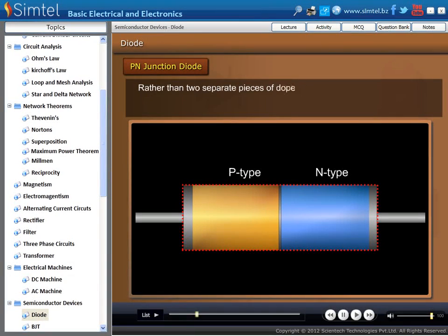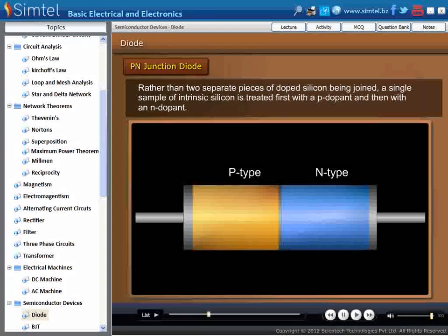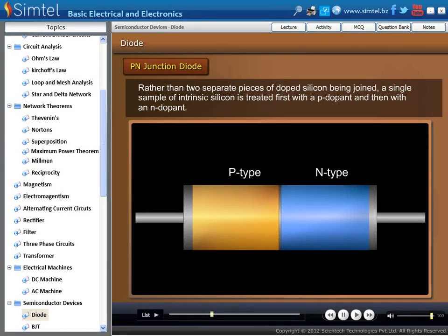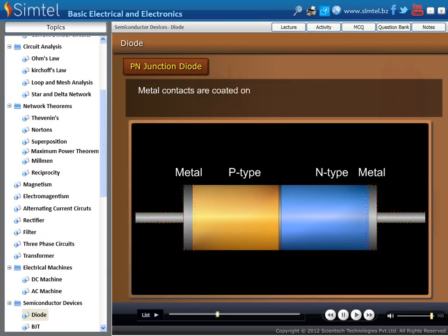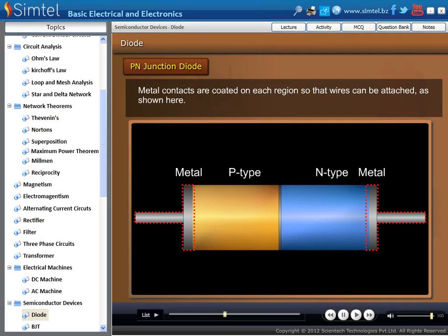Rather than two separate pieces of doped silicon being joined, a single sample of intrinsic silicon is treated first with a P-dopant, then with an N-dopant. Metal contacts are coated on each region so that wires can be attached, as shown in an animation.